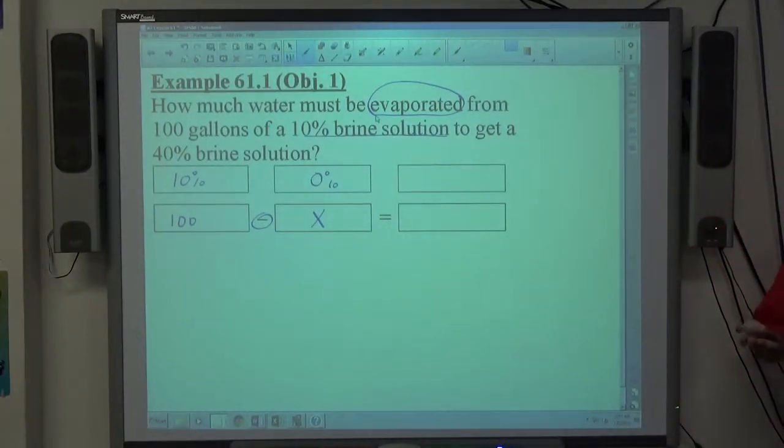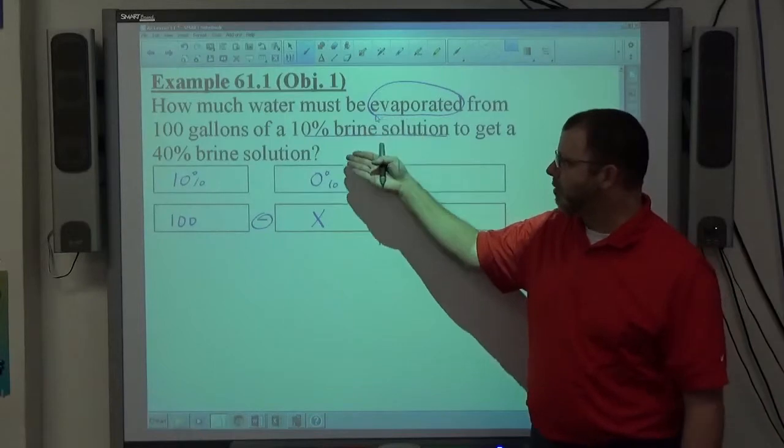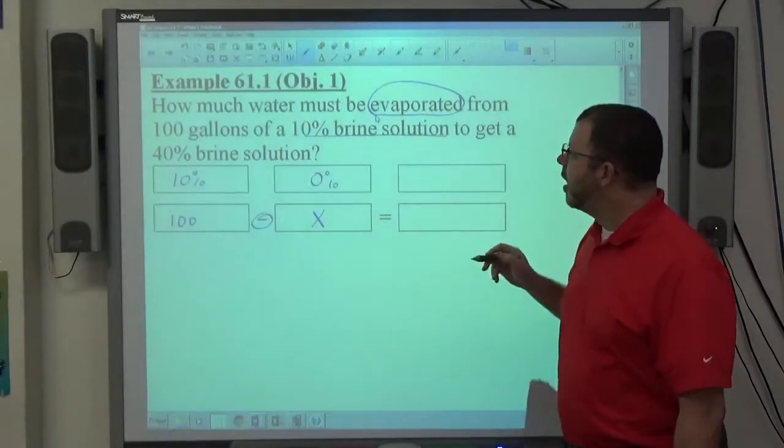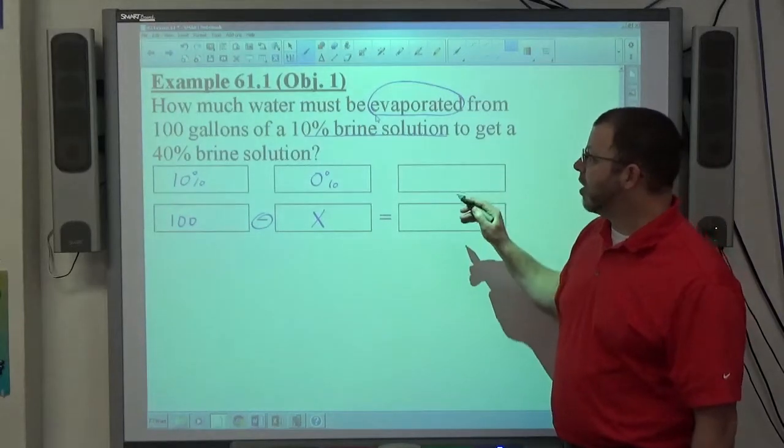Okay, anytime that'll give you a percent, the percent's either going to be 0 or 100. It's up to you to decide which one it is. In this case, we're evaporating water from brine. Water is not brine, so we put a 0%. And we're trying to create a 40% brine solution.